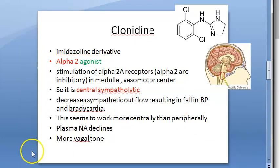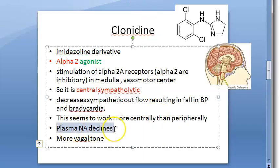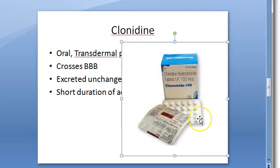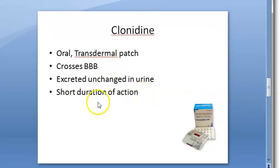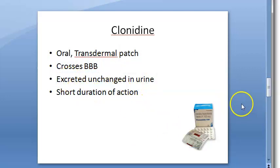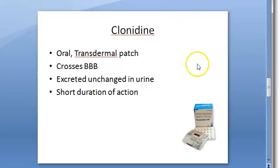To summarize the introduction: clonidine is a central sympatholytic that increases vagal tone, reduces blood pressure, and causes bradycardia. It also reduces noradrenaline/norepinephrine levels in the plasma. Regarding pharmacokinetics, clonidine is available as an oral formulation and also as a transdermal patch. It crosses the blood-brain barrier, which is expected since it is a central sympatholytic. It is excreted unchanged in urine and has a short duration of action.